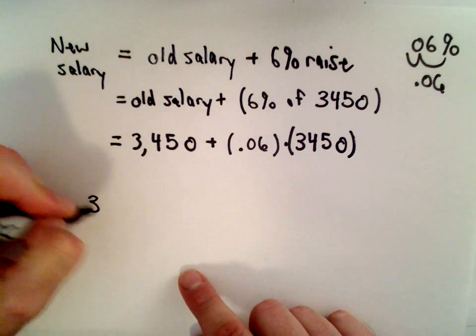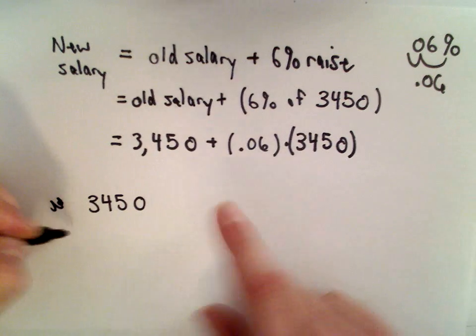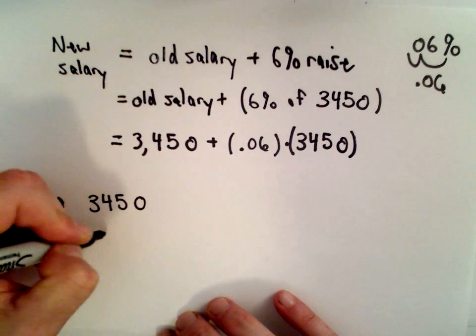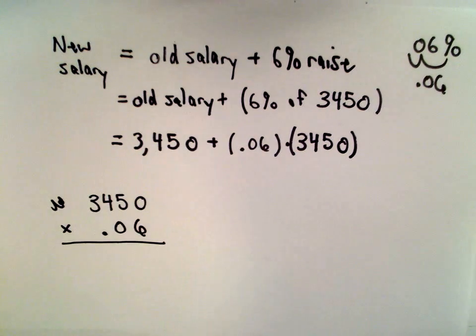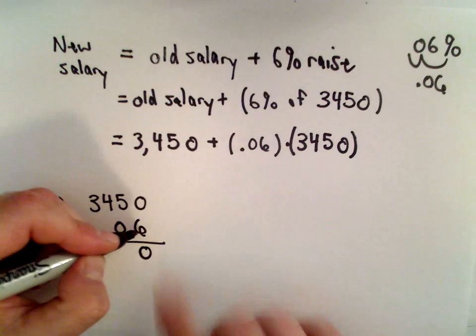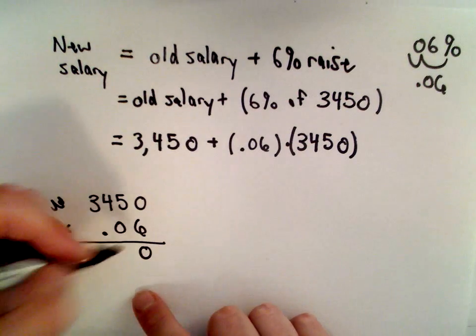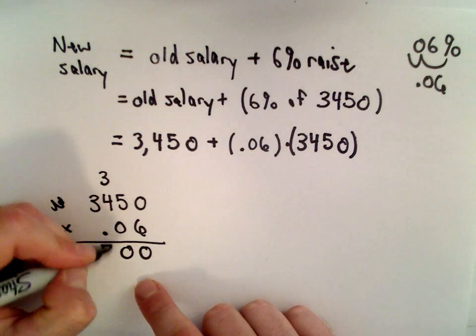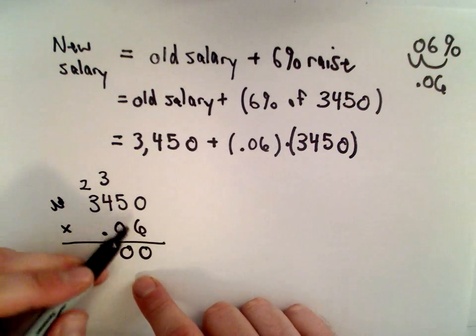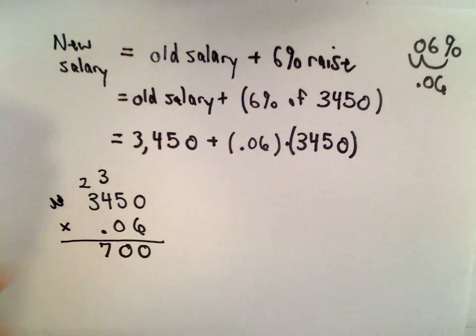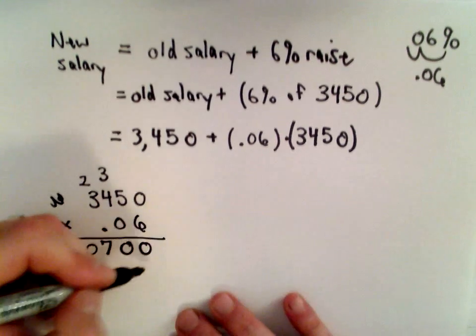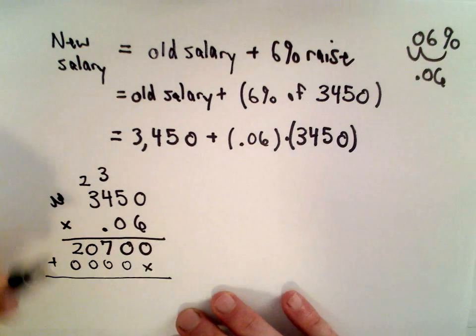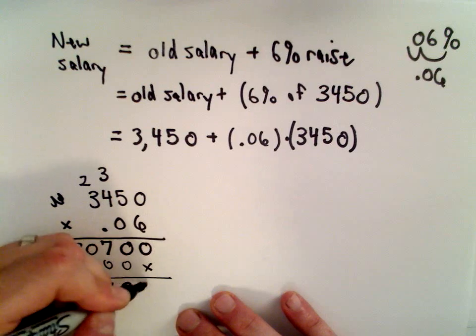I like to put the decimal at the bottom, so there's my 3450, and the smaller number with fewer digits, .06. Now let's multiply: 6 times 0 is 0, 6 times 5 is 30 so I'll drop down the 0 carry the 3, 6 times 4 is 24 plus 3 is 27, carry the 2, 6 times 3 is 18 plus 2 is 20. Zero multiplied by everything gives us zeros. So adding, we have 20700.